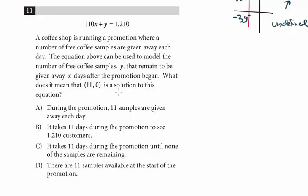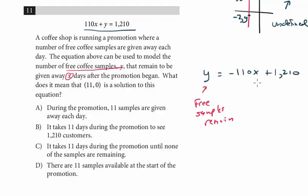What does it mean that (11, 0) is a solution to this equation? So again, we have a linear equation set to a real life scenario. Let's put this into slope intercept form, so we have y = -110x + 1210. And whenever they're set to a real life scenario, let's get in the habit of labeling what each variable designates. So we're told that the number of free coffee samples, that's y, so we'll say free samples that remain, and the x is how many days after the promotion began, so days after.